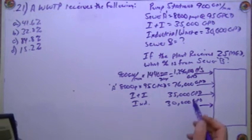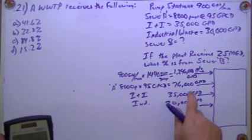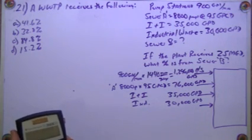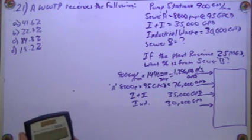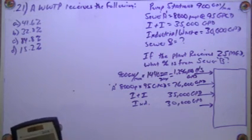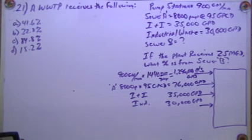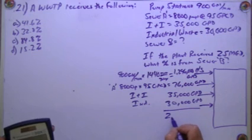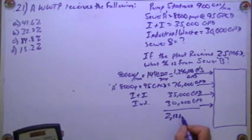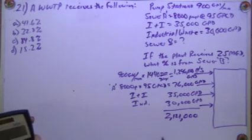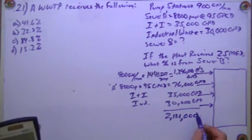So we'll add all those up: 760,000 plus 1,296,000 plus 35,000 plus 30,000 should give me 2 million. That total is 2,121,000, two million one hundred twenty-one thousand total.